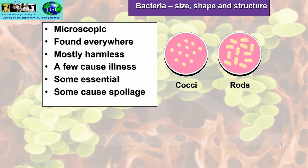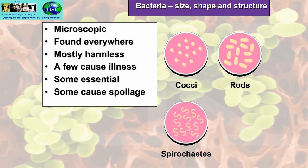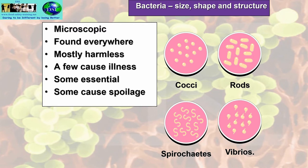We've got rods — E. coli is an example of a rod-shaped bacterium. You've also got spirochetes, and lastly vibrios, such as Vibrio parahaemolyticus.